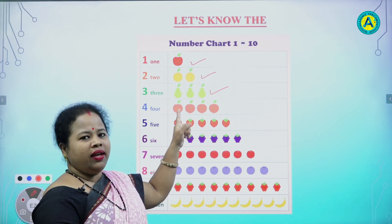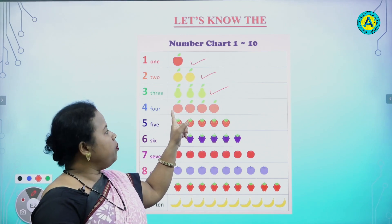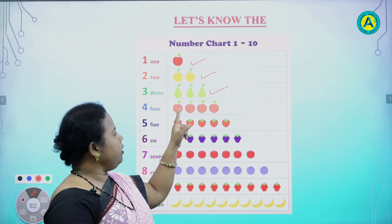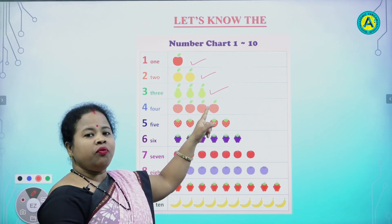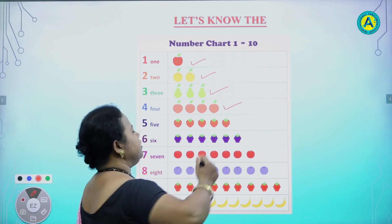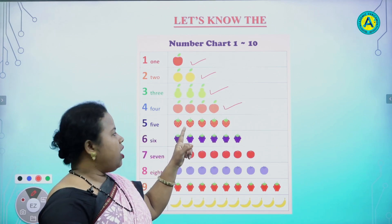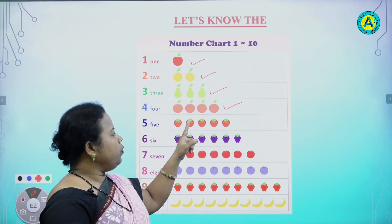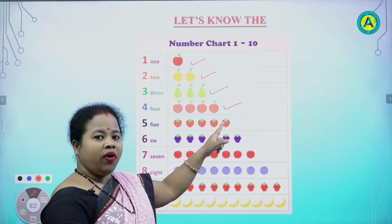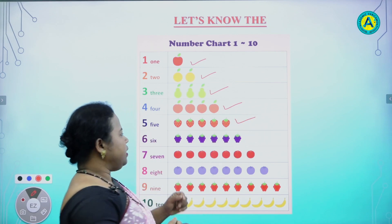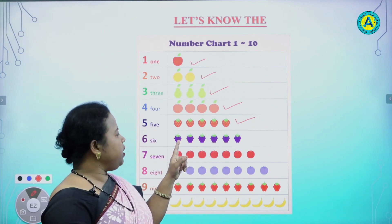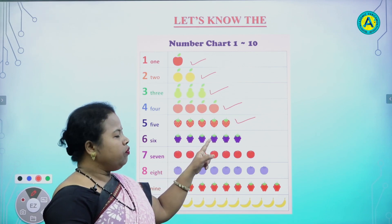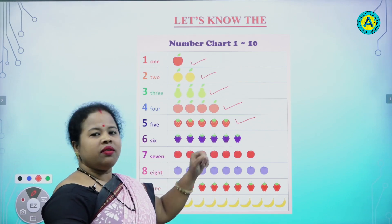In the fourth line, tell how many fruits are there? Count. 1, 2, 3, 4. Very good. In the fifth line, how many fruits are there? Count. 1, 2, 3, 4, 5. Very good. In the sixth line, tell me, how many fruits are there? 1, 2, 3, 4, 5, 6. Very good.